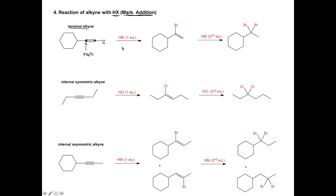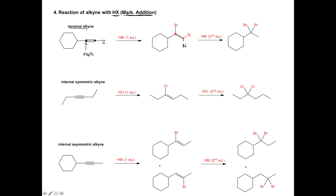We clearly have a Markovnikov position — that is the carbon of the alkyne on the left side. When we add HBr, we follow Markovnikov's rule: adding the H to the side where there are more H's and the bromine to the side where there are fewer. That means we add our bromine to the carbon closest to our cyclohexane and add an H to the outside. When we add the second equivalent, we again have a Markovnikov position, so the two bromines get added to the same carbon and the H's are added to the other carbon.